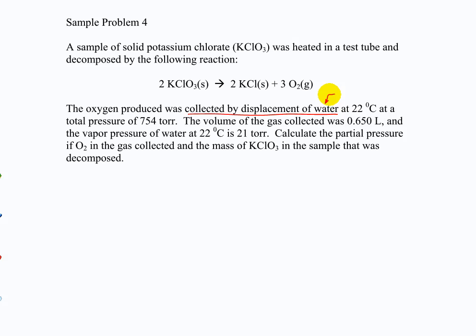Using the idea that total pressure is the sum of the partial pressures, we just have to subtract out the water pressure and then do the rest of the problem like normal. The only difference when collecting over water is you subtract out the water pressure from your total pressure before you go on. The question says this was collected at 22°C at a total pressure of 754 torr. So the total pressure in that container is 754 torr, and to get the pressure of just the oxygen, you subtract the pressure of the water, which is given as 21 torr.